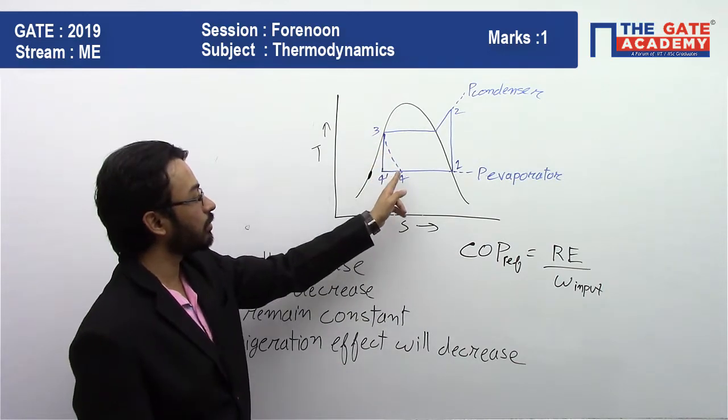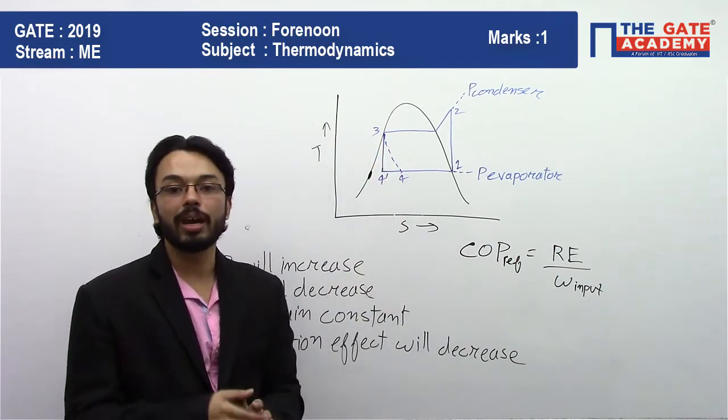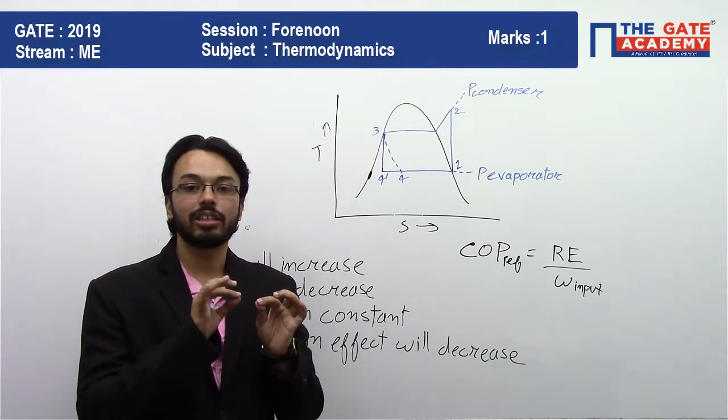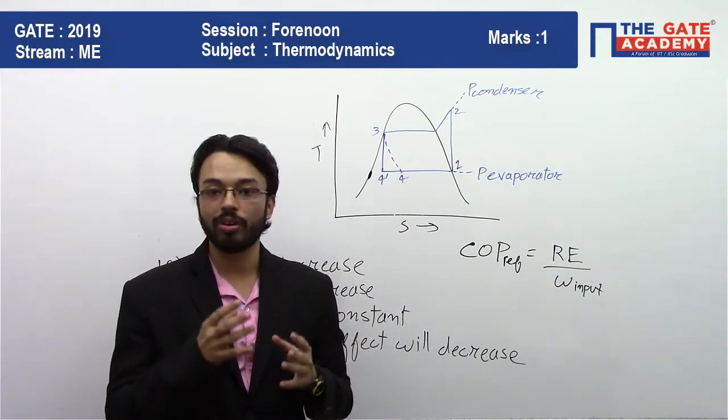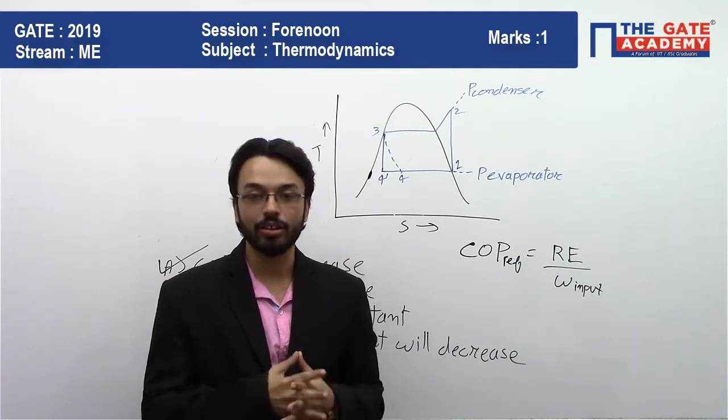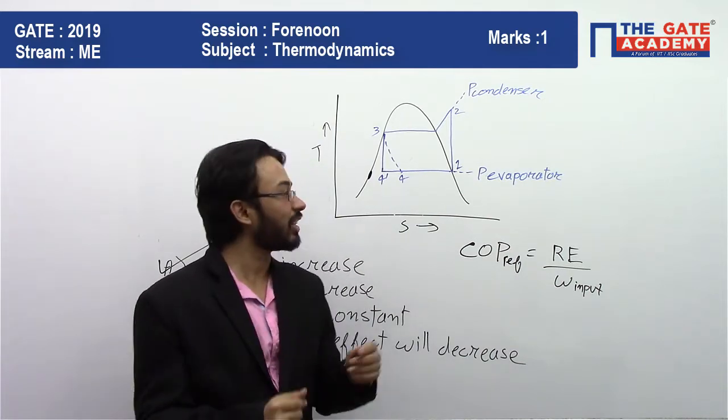That is only possible when this is expanded through a turbine. So you have to create a turbine and creating, designing, and maintaining a moving part is difficult. Whereas if you want to throttle it, you can simply do it by a capillary tube. That is a thin tube of very narrow cross-section, a thin and hollow tube of very narrow cross-section. They are called capillary tubes and will be effective to throttle.